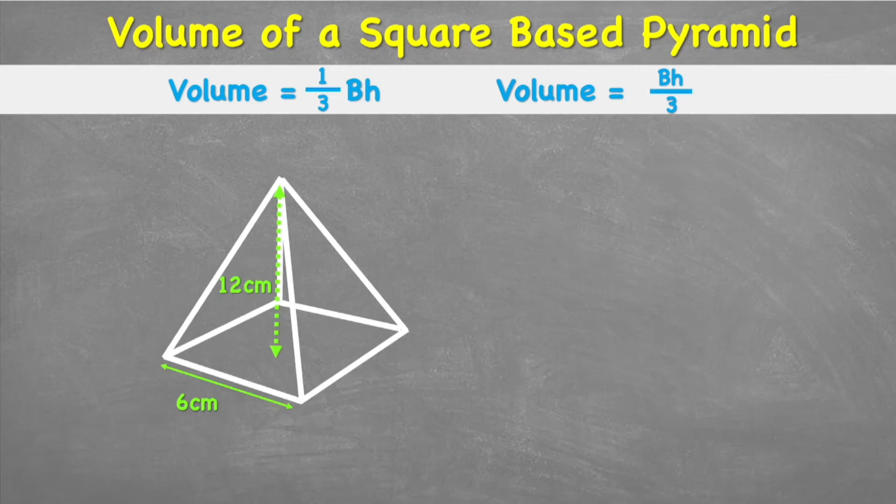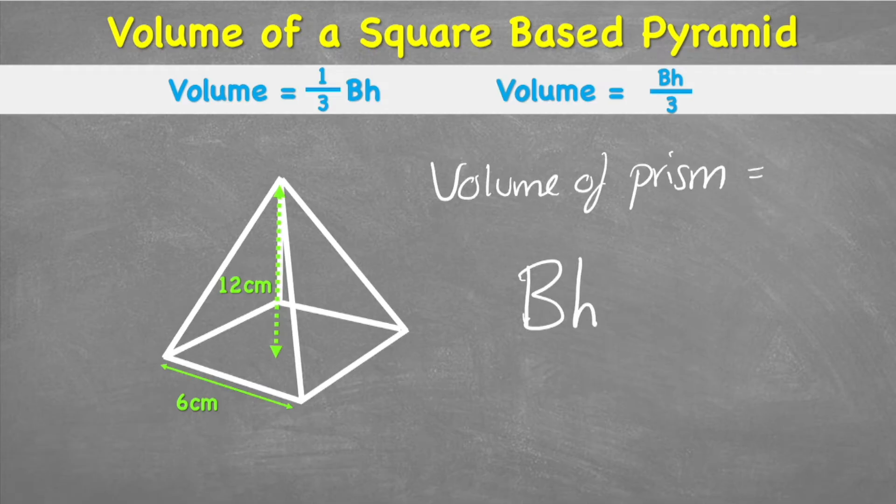When working out the volume of a square-based pyramid, we're going to follow the formula for any prism, which is the area of the base (shown by this capital B) times height. But in this case, we're going to multiply by one-third in front of it because we only want one-third of that space.